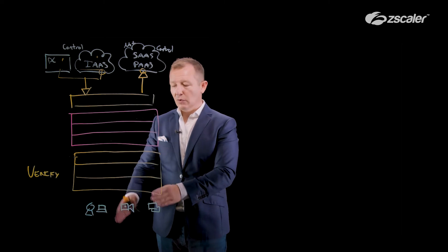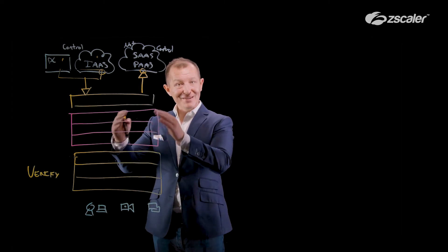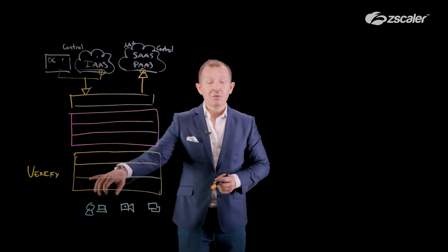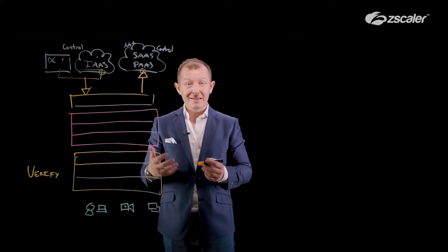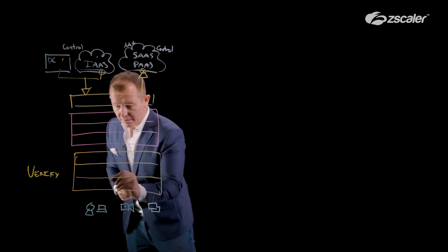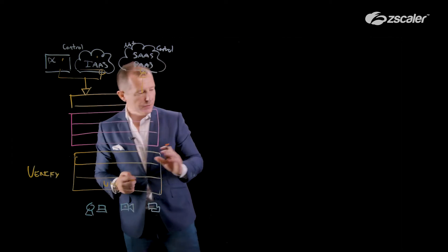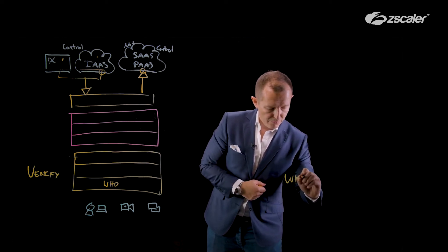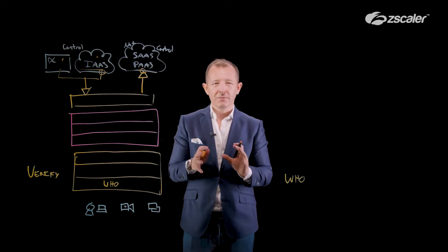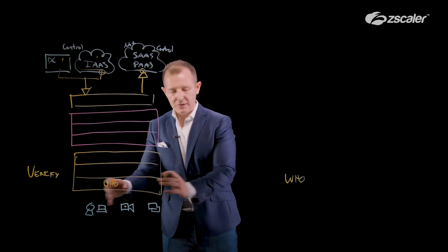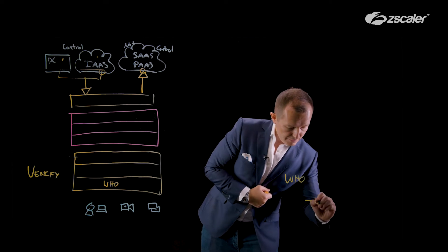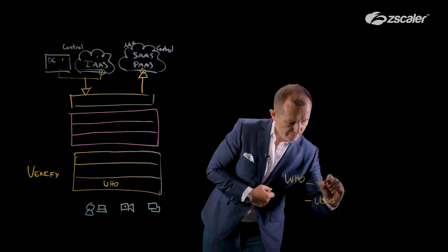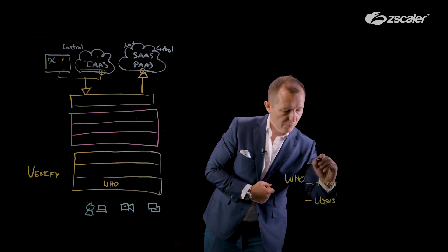The goal is to ensure that every connection is going through these controls onto the destination application. To verify all this, we have to go through some stages. The first one is understanding the who — and I'm talking about the identity. What does who really break down into? If I look at these three boxes, we're going to have users, things, and workloads.